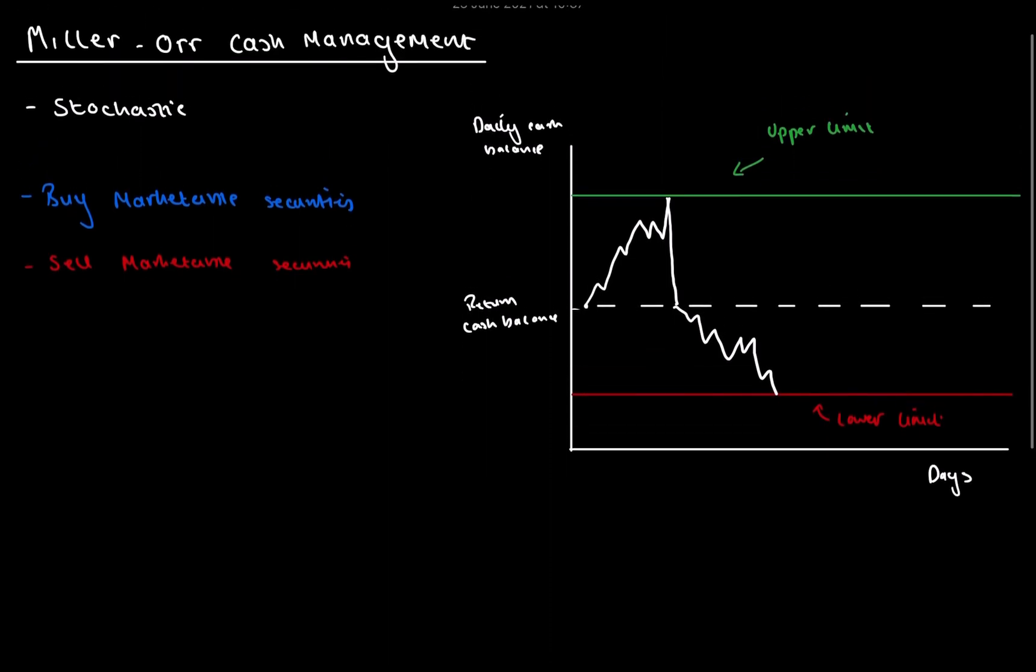So now that we've got that out of the way, what we're going to be explaining is the formula. So to calculate this return point, we use a special formula. And it's essentially working out the optimum balance. We'll call this Z star. So Z star is equal to three times F, which is the fixed amount. F is the transaction cost of selling marketable securities. And then we have this variance squared, this standard deviation squared, which is essentially variance.